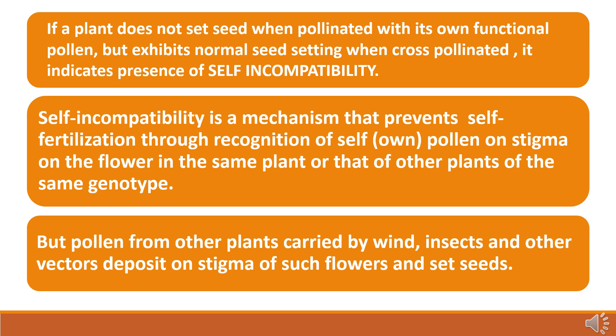Self-incompatibility is a mechanism that prevents self-pollination and self-fertilization, acting on pollen on the stigma of the flower in the same plant or other plants of the same genotype. But cross-pollination takes place when pollen from other plants, carried by wind, insects, and other factors, is deposited on the stigma of such flowers and seed setting occurs after pollination.